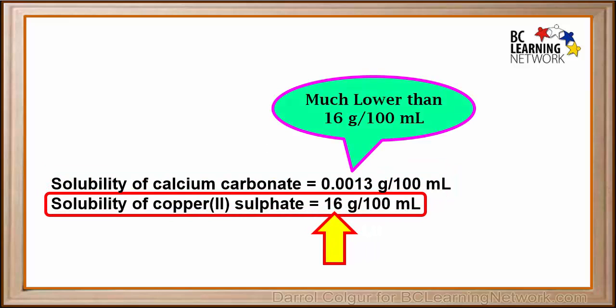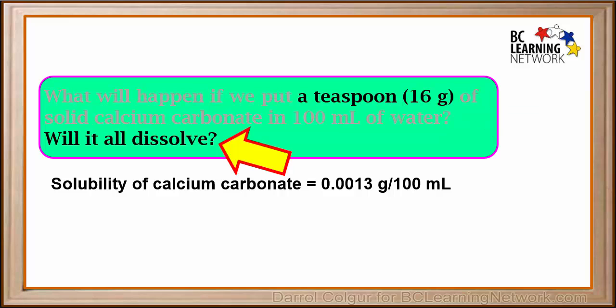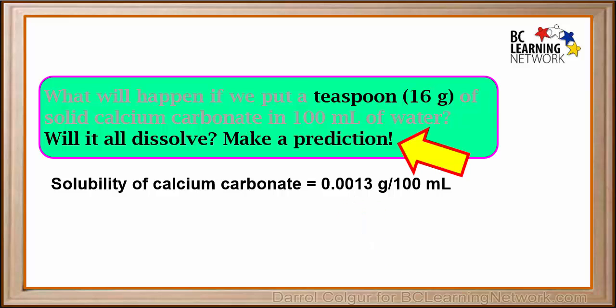Notice that this is much, much lower than the solubility of copper sulfate, which is 16 grams per 100 milliliters. So what do you think will happen if we put a teaspoon, or 16 grams, of solid calcium carbonate in 100 milliliters of water and stir it? Will it all dissolve? Remember, the solubility of calcium carbonate is 0.0013 grams per 100 milliliters. So make a prediction and let's try it.